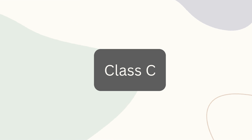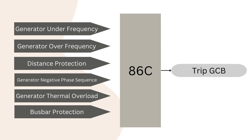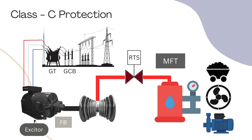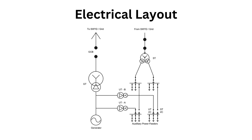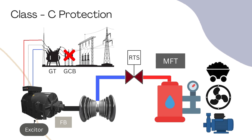Finally, we will understand how Class C protection works. In this scheme, all grid-related faults are targeted: generator under- and over-frequency, distance protection, generator negative phase sequence, generator thermal overload, and busbar protection. The trip command goes to the GCB only. For example, if generator under-frequency protection operates, it energizes the 86C relay and issues a trip command to the GCB — the generator is disconnected from the grid but not stopped. This power will go to the UTs for station requirements, a condition called generator islanding. Running the generator for unit loads (about 5–10% of generation capacity) is not economical, and generator over-speeding may also occur, so the turbine is also tripped.